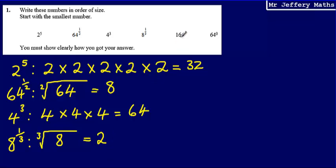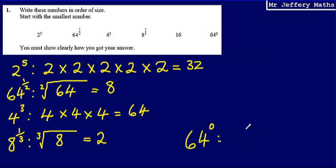Then we've got 16, which obviously we don't need to do anything with. And then we've got 64 to the power of 0. So 64 to the power of 0 is simply 1. Anything to the power of 0 — any quantity to the power of 0 — is 1.